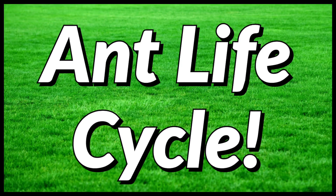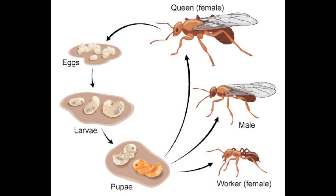Hello Ant Keeper. The life cycle of the ant consists of four stages: egg, larva, pupa, and adult.